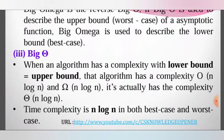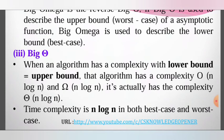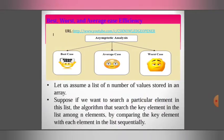The time complexity is n log n in both best case and worst case. In the worst case, we use Big O; in the best case, we use Big Omega; and when the worst case and average case efficiency is n, we use Big Theta.